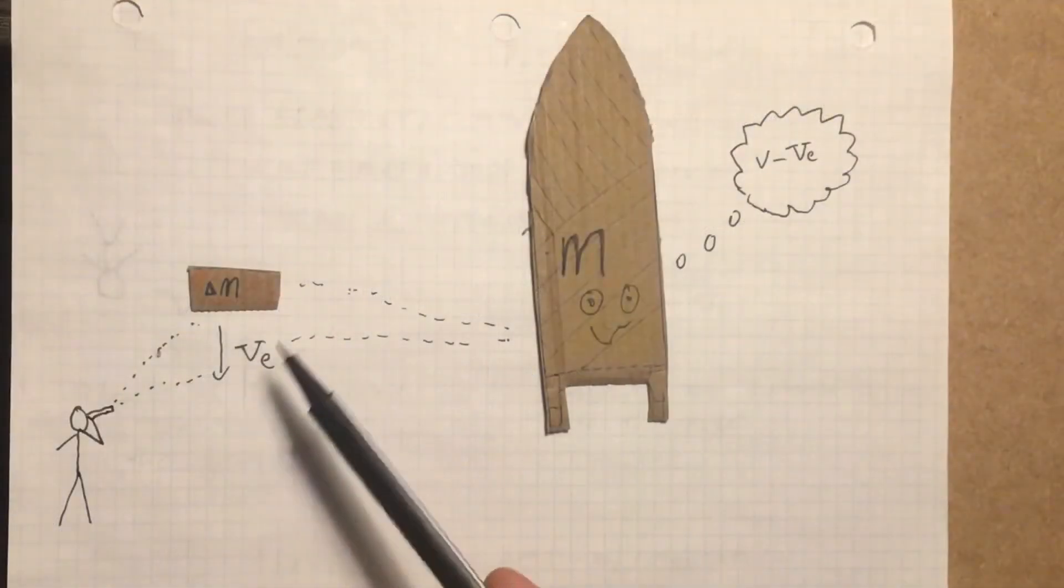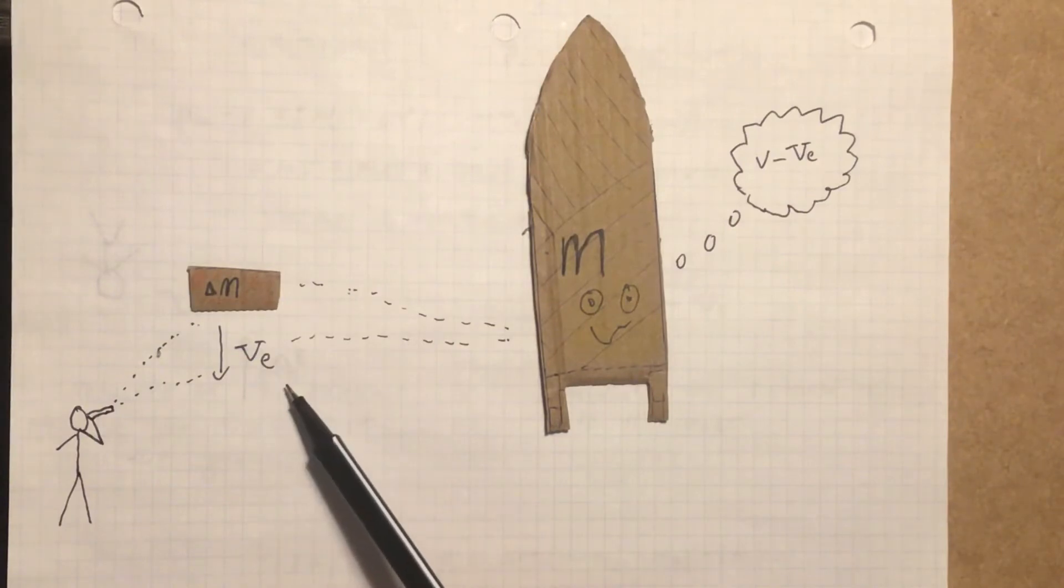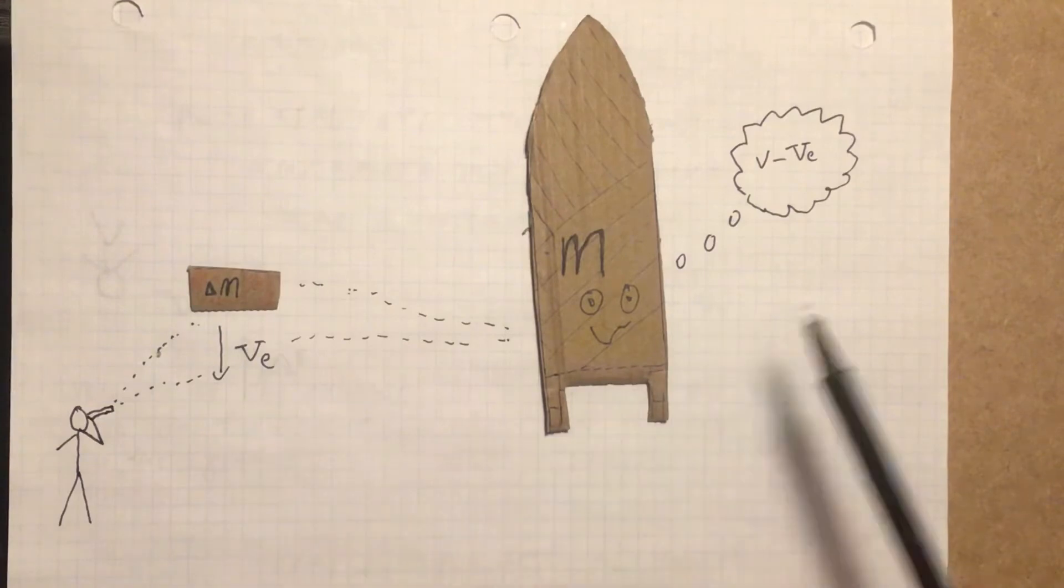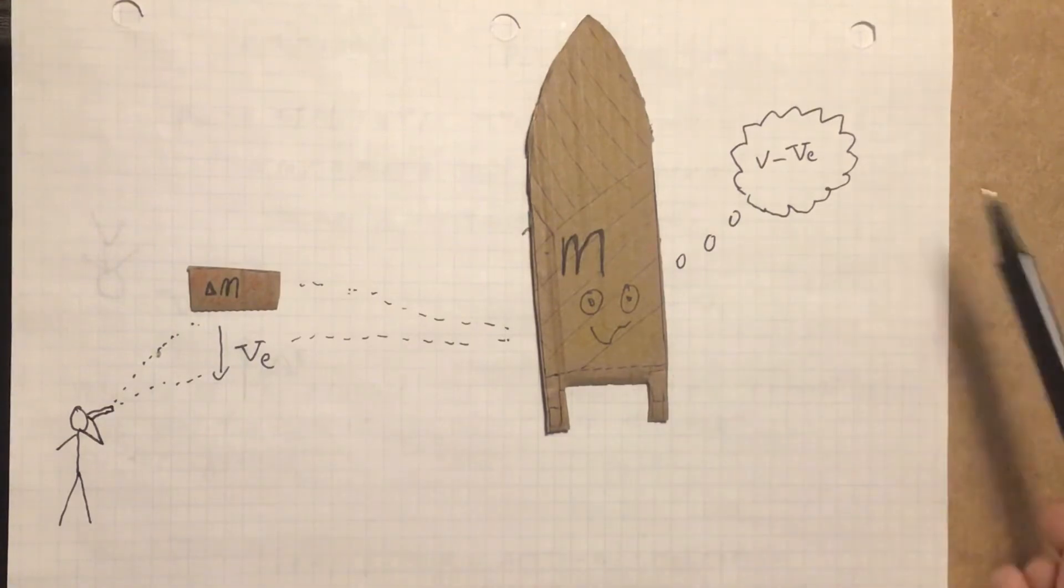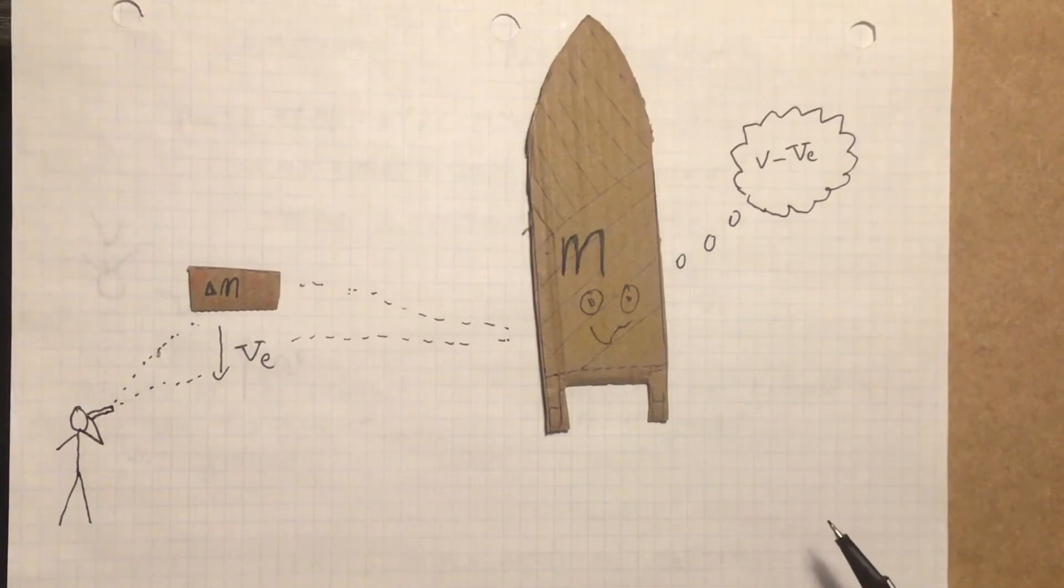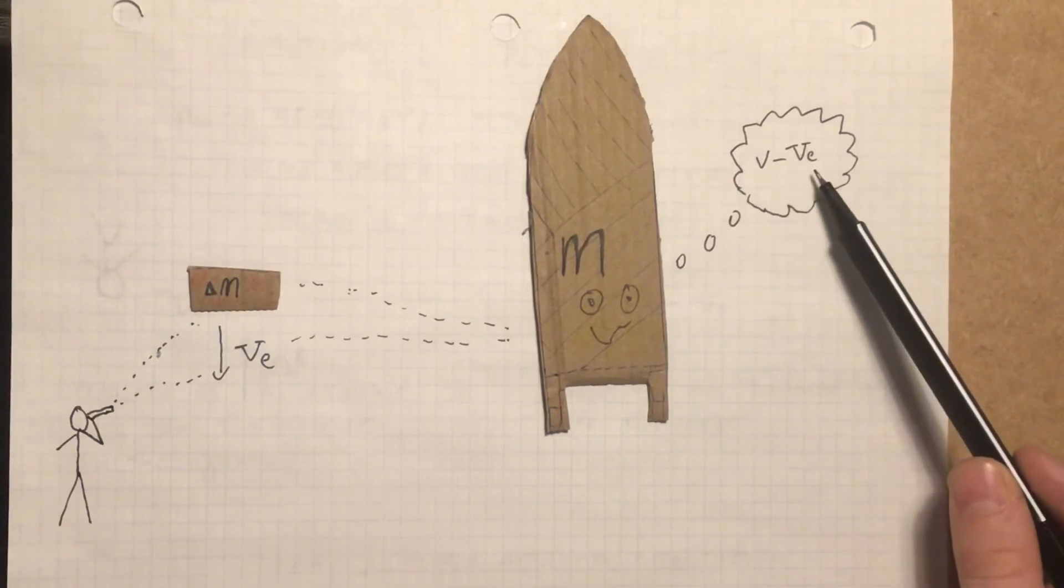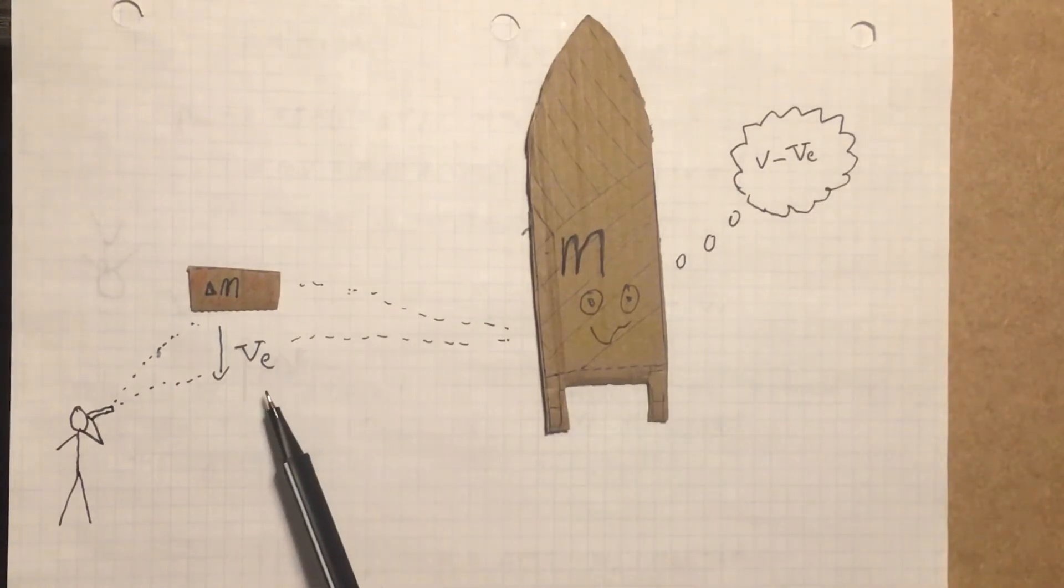We know that our exhaust is moving with the velocity v_e relative to the observer on the ground. But relative to the rocket, it will be moving with v minus v_e. And it is important to understand that this is v minus v_e and not v plus v_e because v_e has a negative direction in this situation. So, it will be v minus v_e.